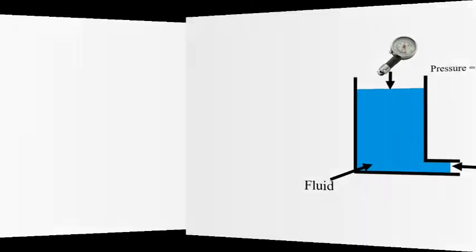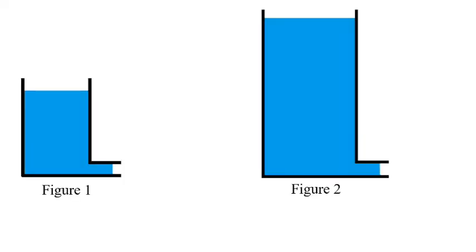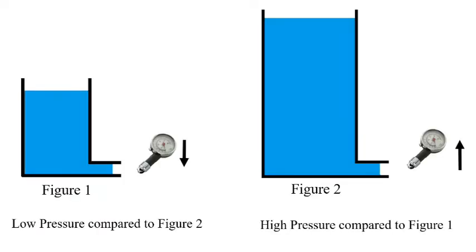We will start by considering an example of a tank filled with some kind of fluid. If you measure pressure at the top then reading will be zero, but if you measure pressure at the bottom you will get some value. If we see figure 2, then the fluid is more compared to figure 1, so there will be more pressure.